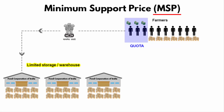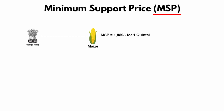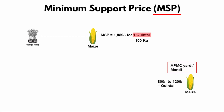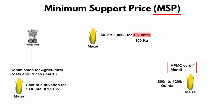Let me explain with an example. Let's say the government has set the minimum support price of maize at Rs. 1850 per quintal — one quintal means 100 kg. But if you go to the local sabzi mandis of different states, the actual rates range from Rs. 800 to Rs. 1200 per quintal. According to the report of the Commission for Agricultural Cost and Prices, the cost of cultivation of maize per quintal is roughly Rs. 1213. So the government has set the procurement price at Rs. 1850 and the minimum cost of production is Rs. 1213.